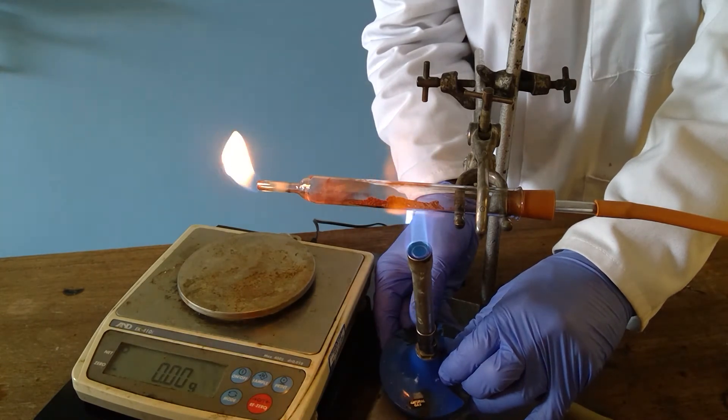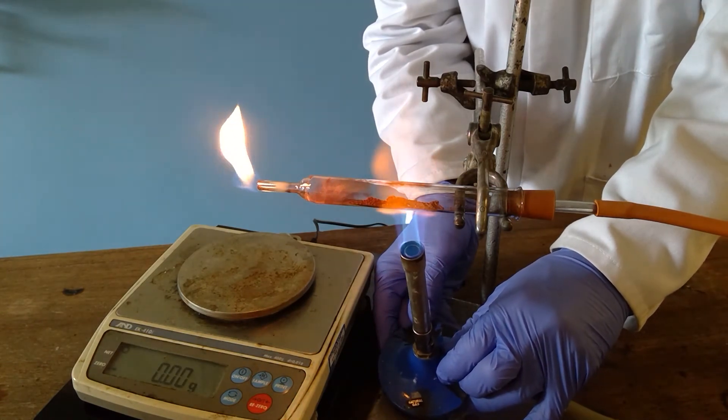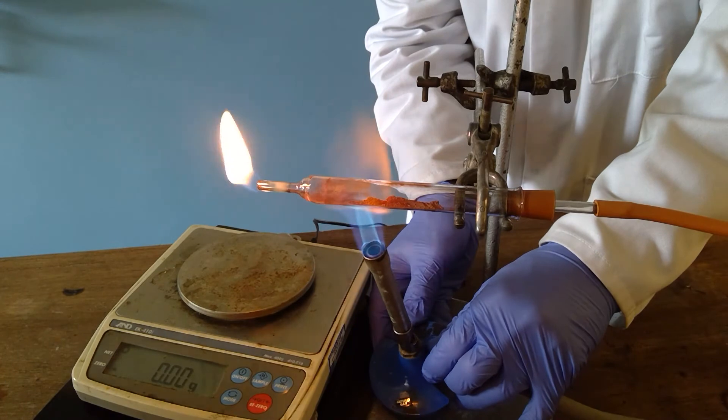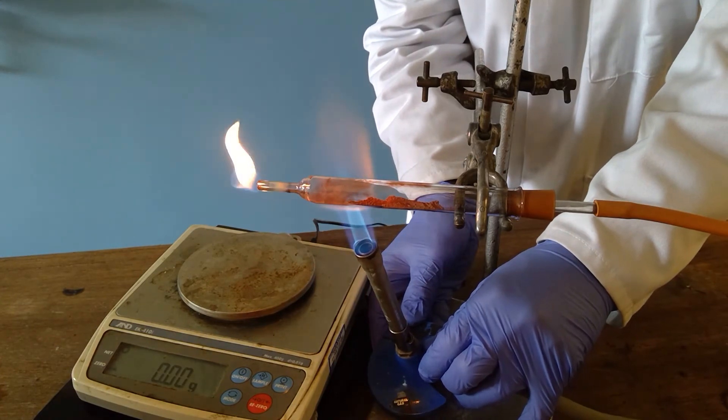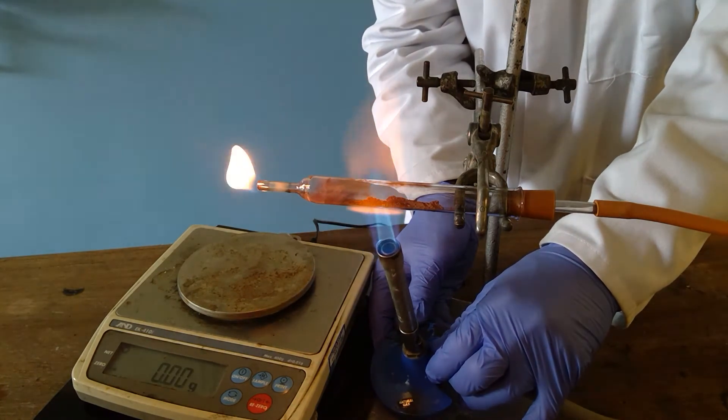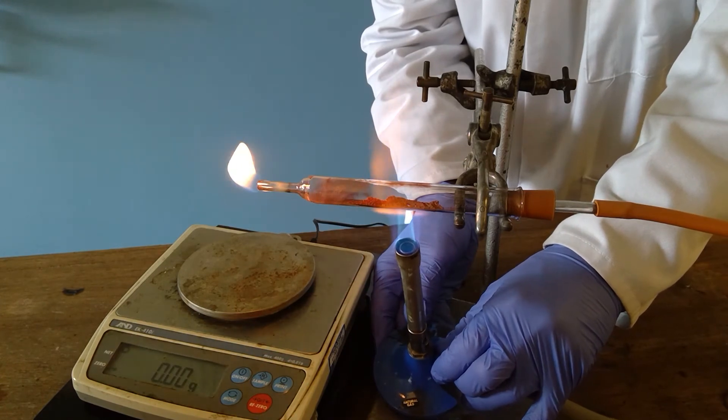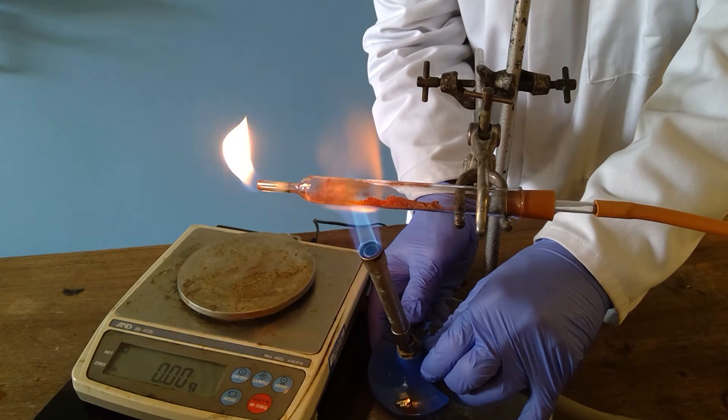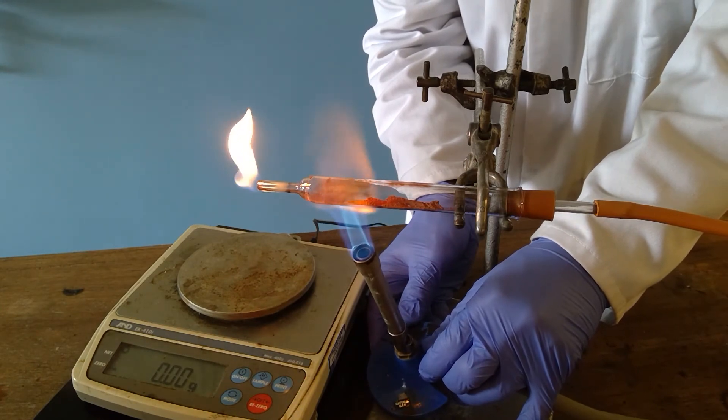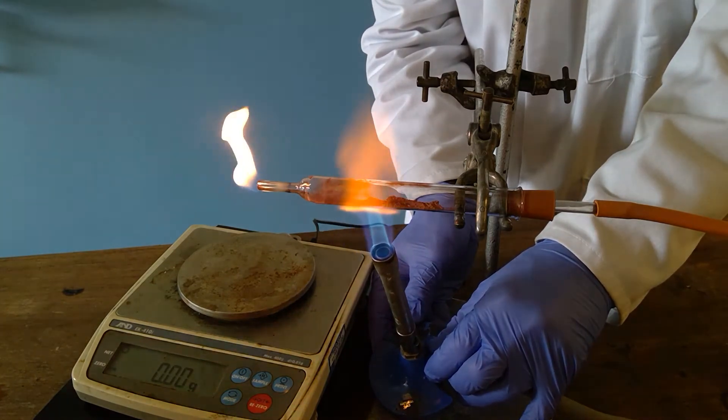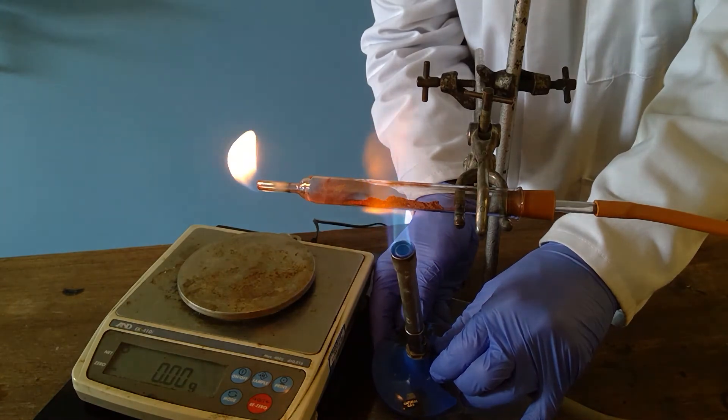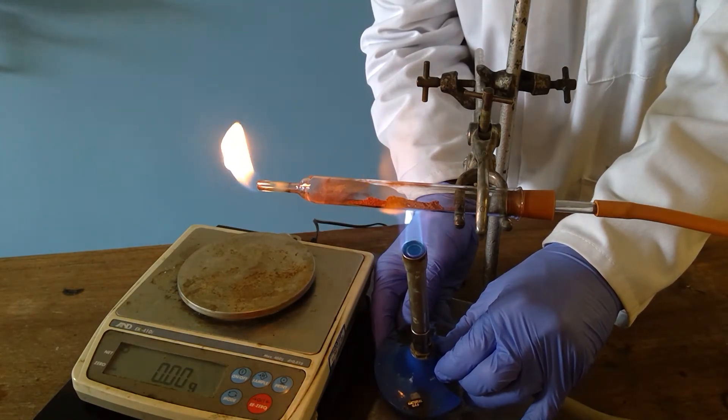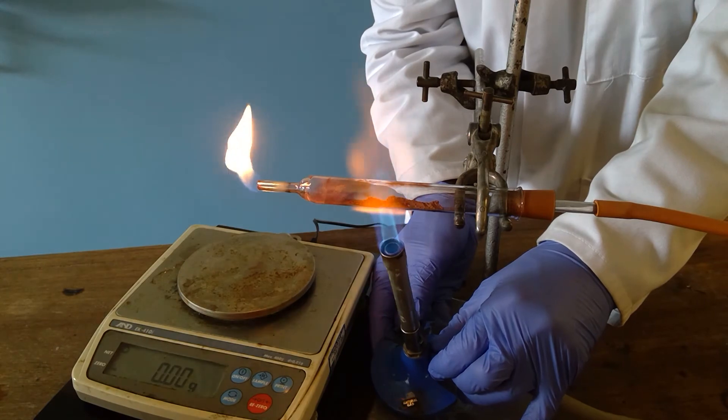To ensure that we have done this we would, after the first weighing, which we would do in a second of the copper and the combustion tube, we would put it back onto this equipment and we would heat again. If, after further heating, it has the same mass we can be fairly certain that we have driven off all of the oxygen. This is called heating to constant mass.